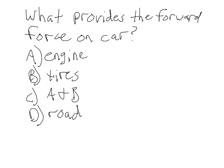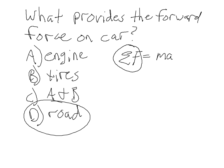The correct answer is D — the road. Remember, the sum of forces equals mass times acceleration, representing the net external force. Anything that accelerates the car has to come from outside the car; the car cannot exert a net force on itself. The only one of these options that is external to the car is the road. If you're thinking, 'the road's just sitting there — how can it exert a force on the car?' — that involves Newton's third law, which we'll cover in the next mini lesson.